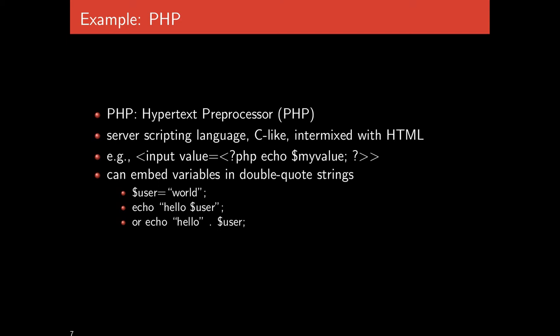Here we have a PHP tag which echoes the string myValue. Whatever the variable myValue's value is gets put into that PHP block inside the inputValue equals. So what ends up happening is that PHP block gets replaced with the result of running the code echo $myValue, which prints out the value of myValue. PHP also allows you to embed variables within strings — if you set the variable user to 'world', you can echo 'hello $user' and that'll echo 'hello world', or you can concatenate strings with the dot operator.